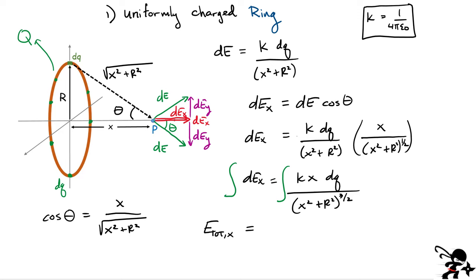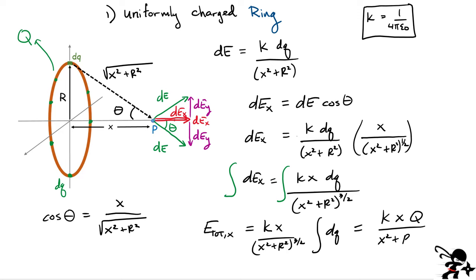Let's take out all constant terms from this integral. K is a constant. X is also a constant — it's always the same distance. Everything in the denominator is the same. What I'm left with is simply integrating over all the charge, which is a very simple integral — that is just the total charge of the ring, which I'm calling big Q. So our final result is KXQ divided by X squared plus R squared to the three-halves, and the direction of that field is in the X direction.